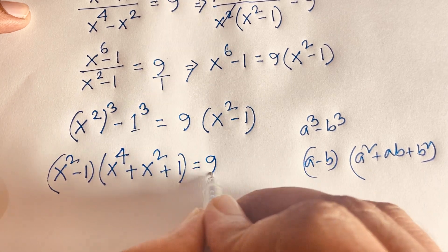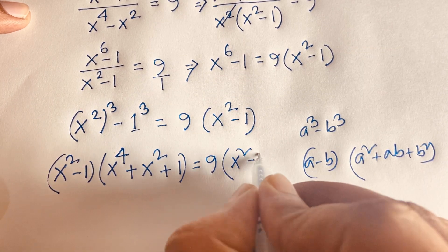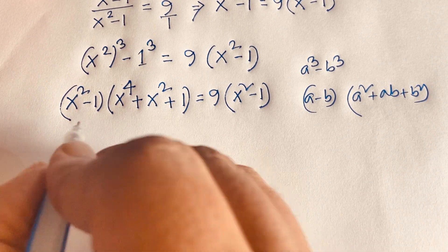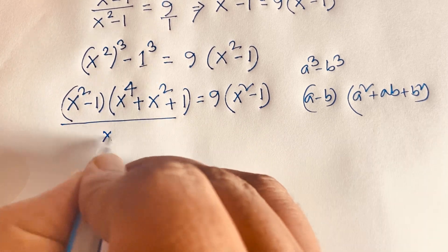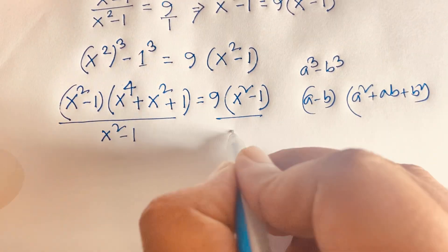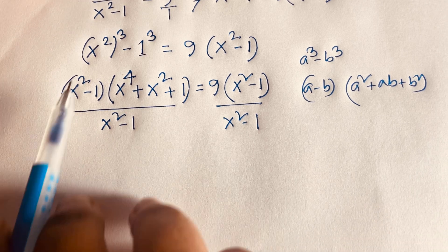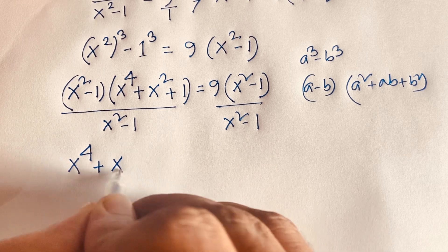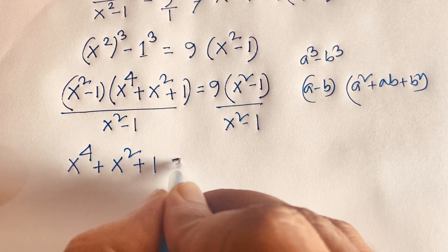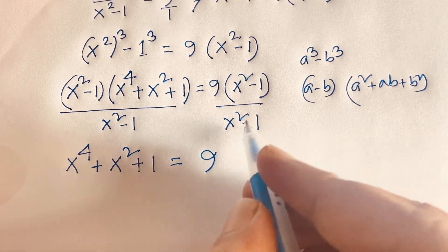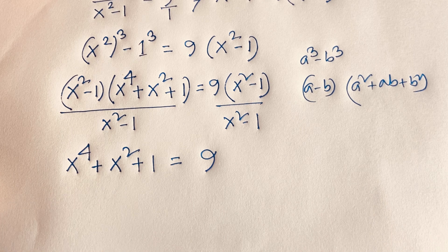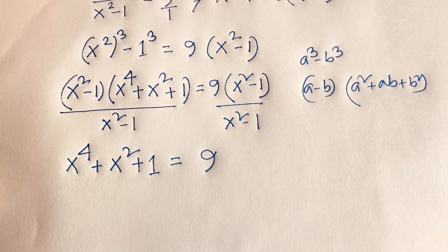Dividing both sides by (x² - 1), the (x² - 1) terms cancel, and we find x⁴ + x² + 1 = 9.